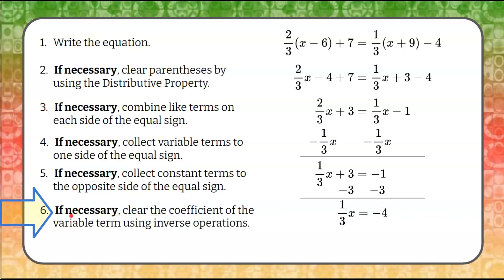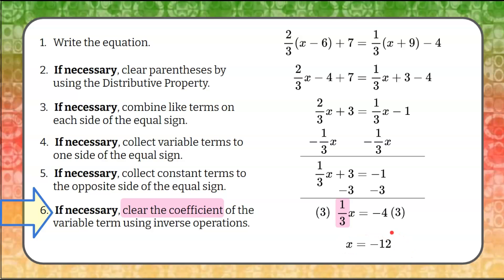Step six: if necessary, clear the coefficient of the variable term using inverse operations. Our coefficient is one-third. To clear it, we multiply by its reciprocal, three. One-third times three equals one, so three times one-third x is just x. Negative four times three is negative twelve. Our solution is x equals negative twelve.